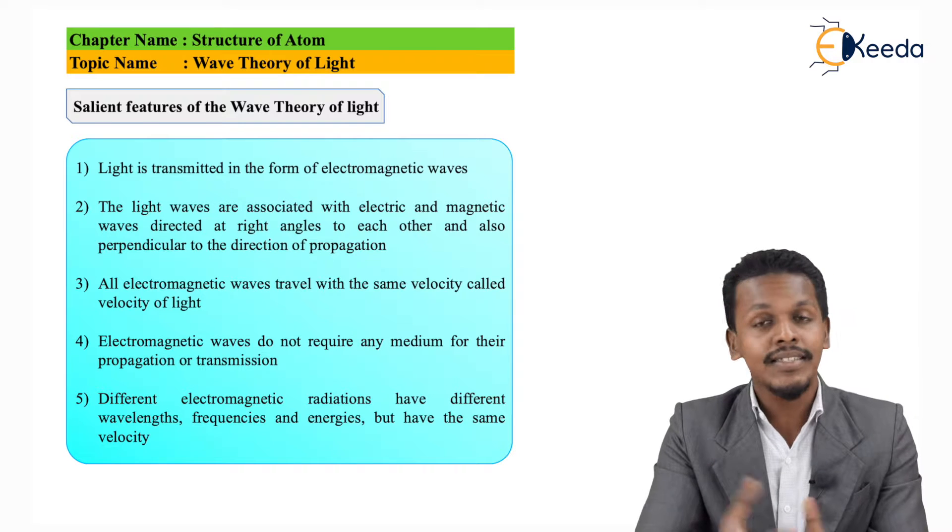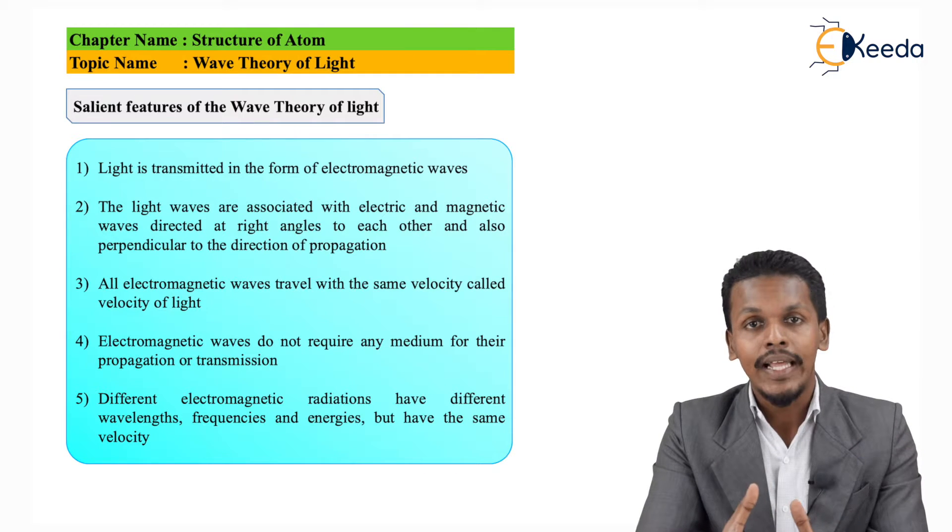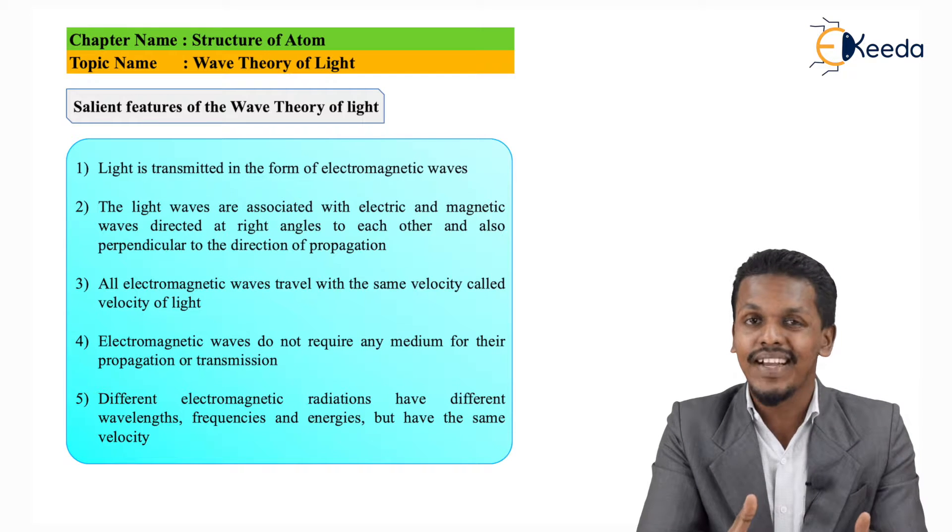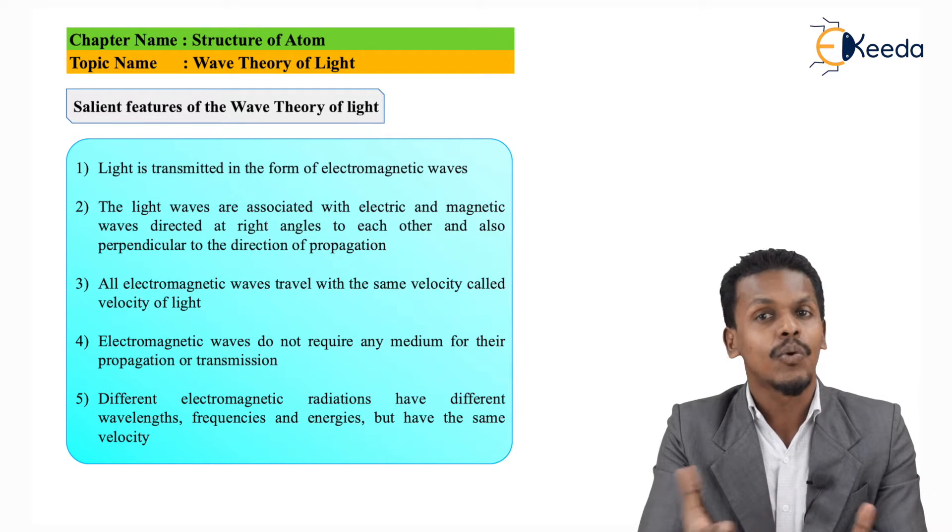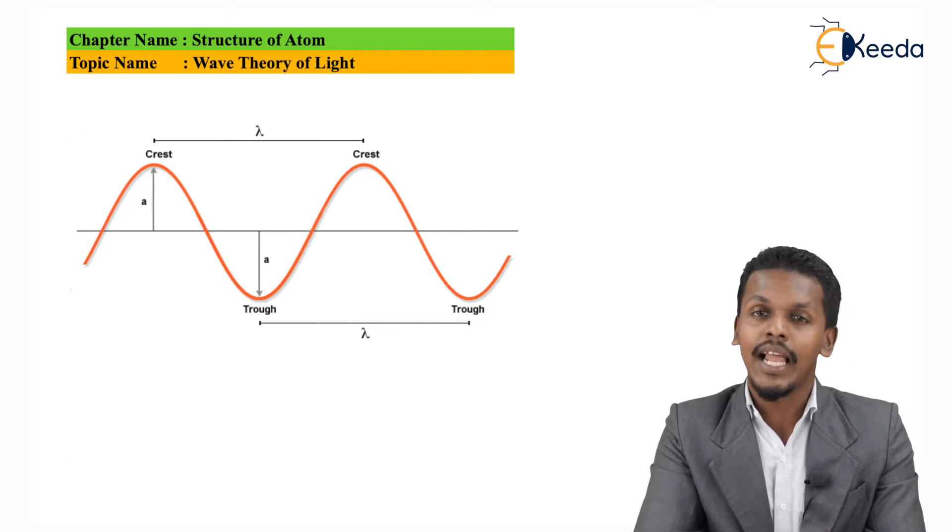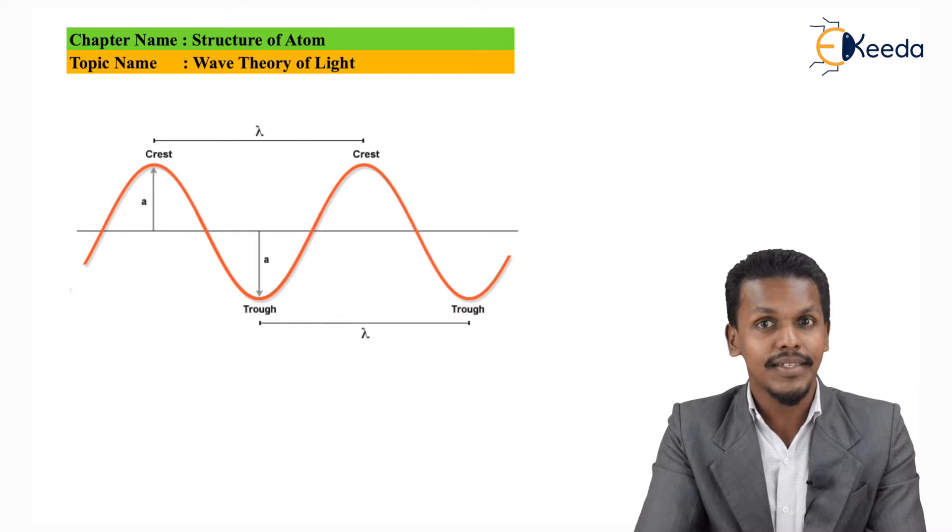So based on that, let us understand how the wave propagates and how the electric field and magnetic field are perpendicular to each other and travel in a straight path. This can be explained with the help of a diagram.